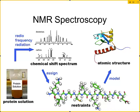NMR spectroscopy does not use crystals as the source of its signal. What's being used is the protein in solution. You expose that protein in solution to radio frequency radiation and you get out some chemical shift spectra. The spectroscopist can go into that shift spectra and assign atoms to those different shifts. Depending on the type of spectra — whether it's NOSY, COSY, TOCSY, or other types — you get different distances, indicating which atoms are physically close to other atoms in the structure.